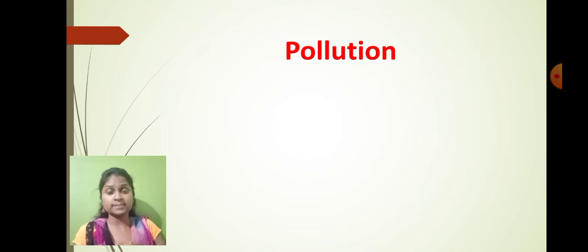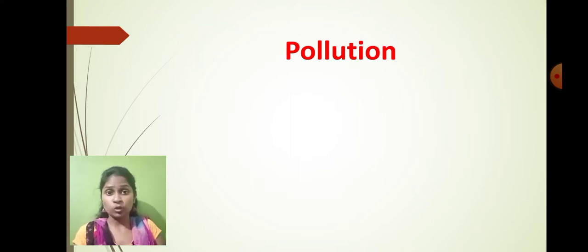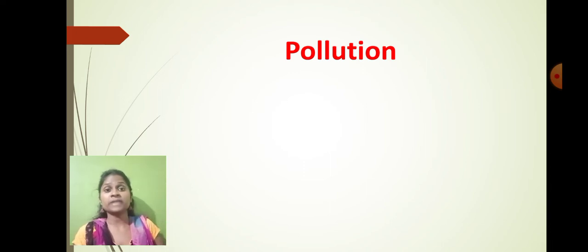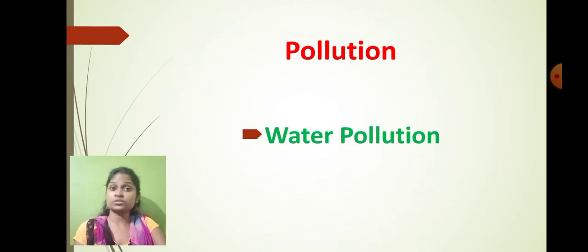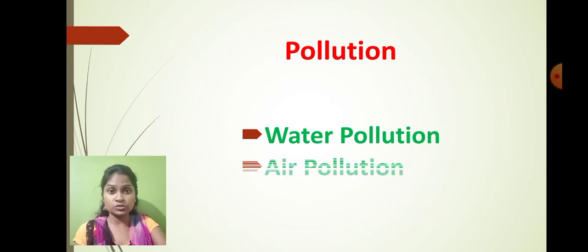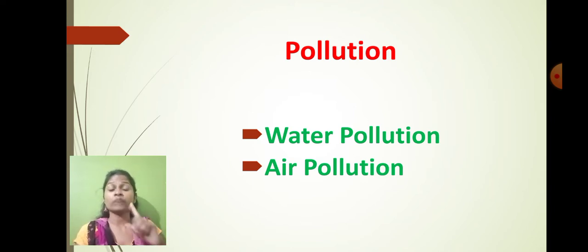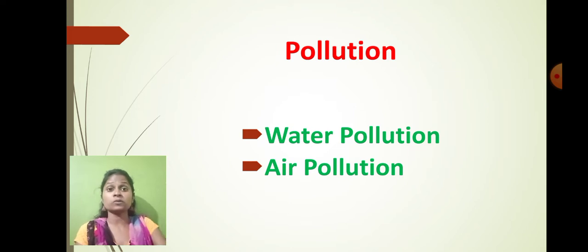By doing deforestation we are directly causing pollution. Pollution is nothing but the contamination of the environment by our activity. The types of pollution we are going to learn today are water pollution, air pollution, and soil pollution. These different types of pollution happen partly because of deforestation.